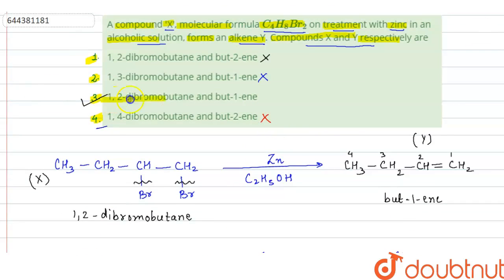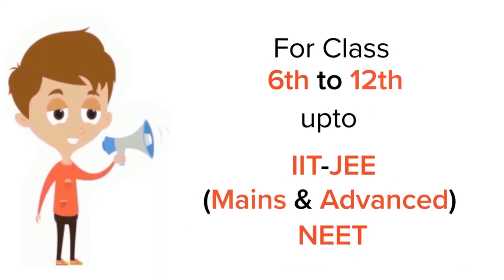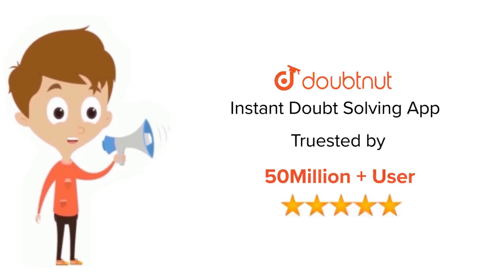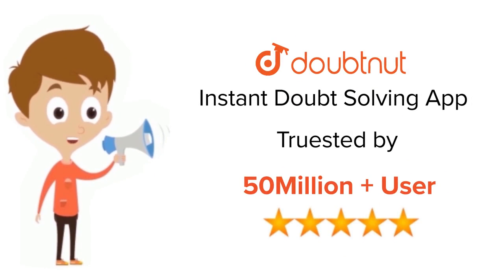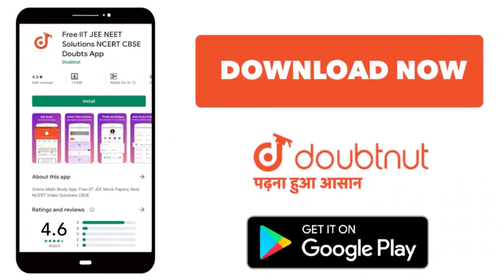The correct option is option 3. Thank you. For class 6 to 12, IIT JEE, and NEET level, trusted by more than five crore students — download DoubtNut today.